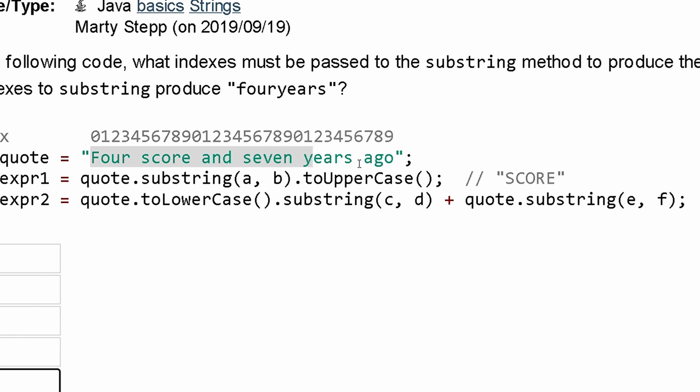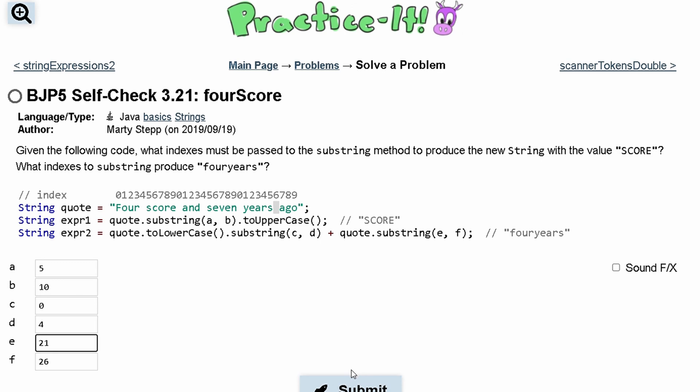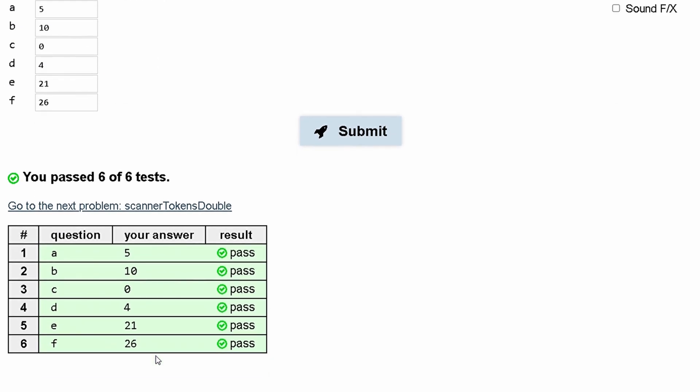And then it's going to go until the index which is 26 right here, and we don't include that index. And if we submit those indexes, we have passed the tests.